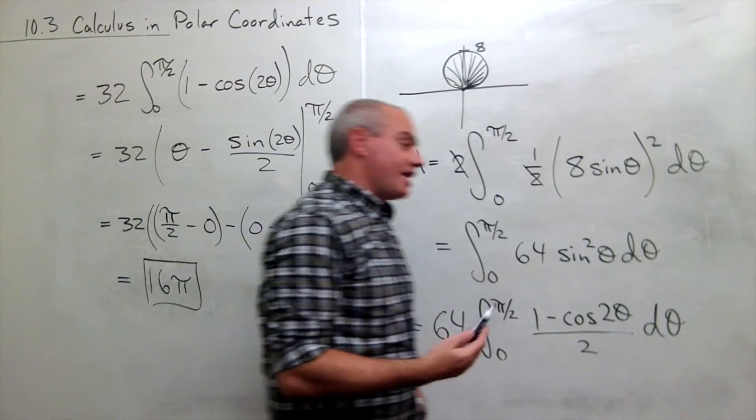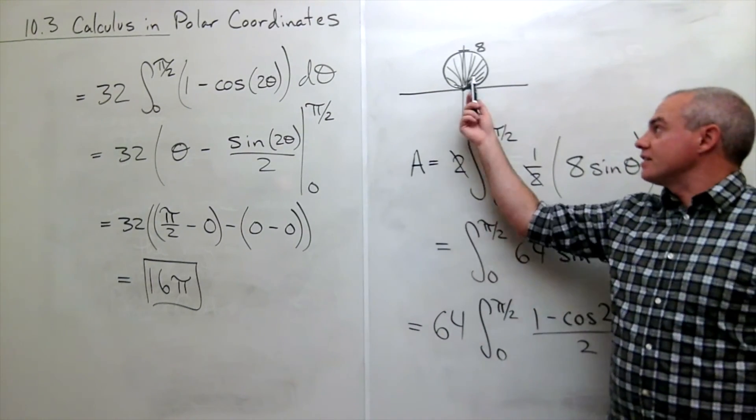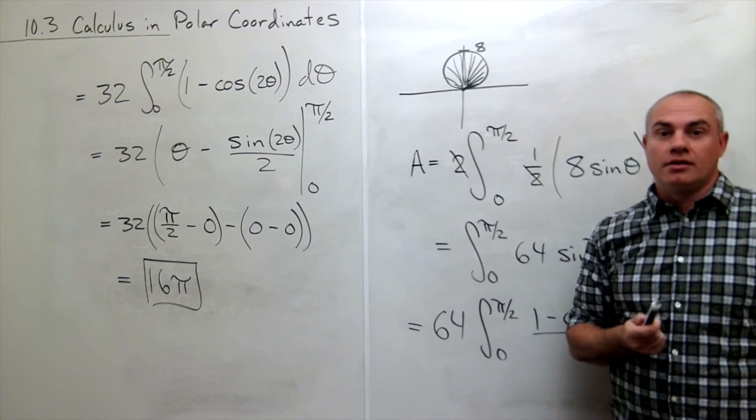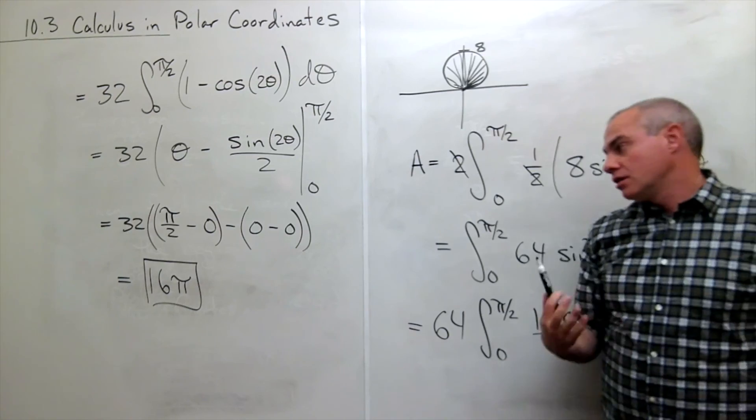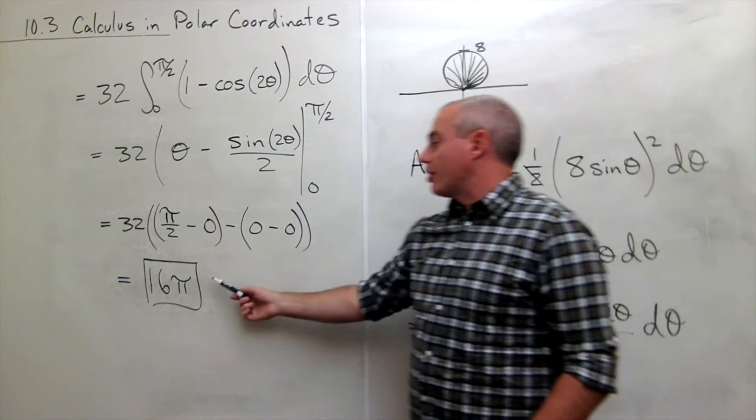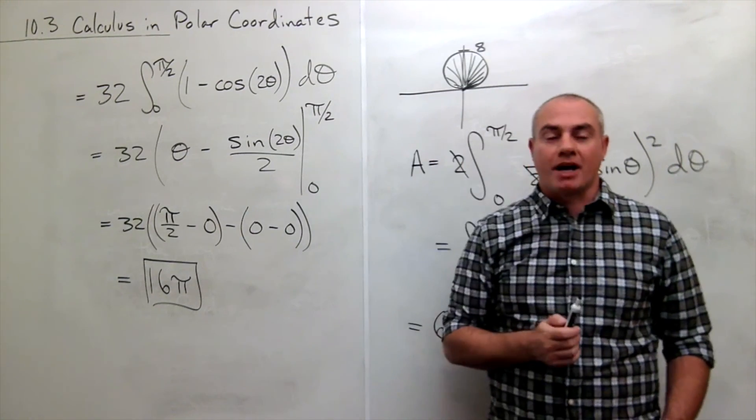Which is exactly what we said it should be if this is in fact a circle of radius 4. The area of the region should be 16 pi and we're done.